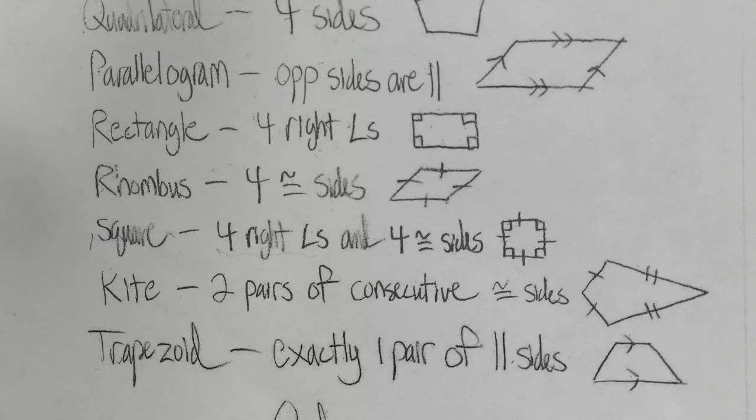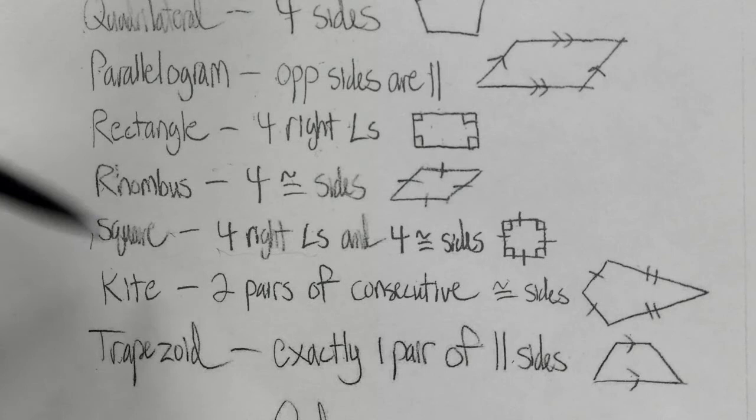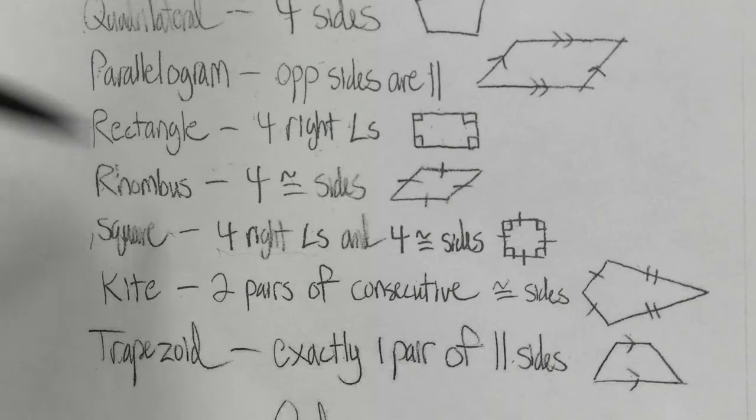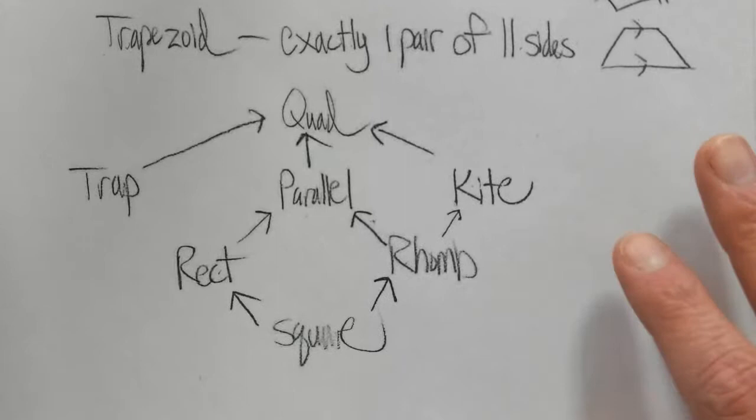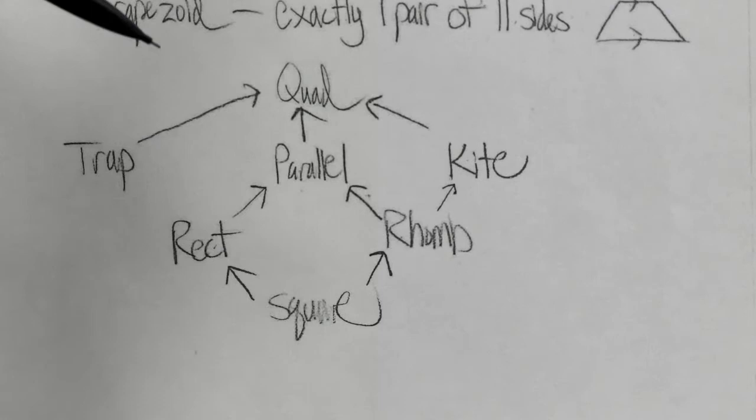Sometimes you'll run into questions that say things like: is a square a parallelogram? And you've got to figure out whether that's yes or no, or is a parallelogram a kite, and that sort of thing. So I've created a chart for you that will make it easy to tell which quadrilaterals fit the definition of other quadrilaterals.